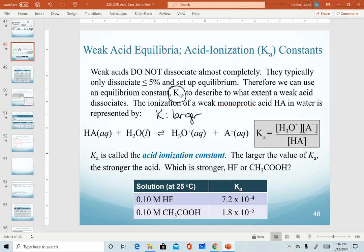The larger a constant is, the more product favored it is. And this is relative, so larger means it's more product favored. So even if we're dealing with small values, the larger a K value is, the more product favored that system is.